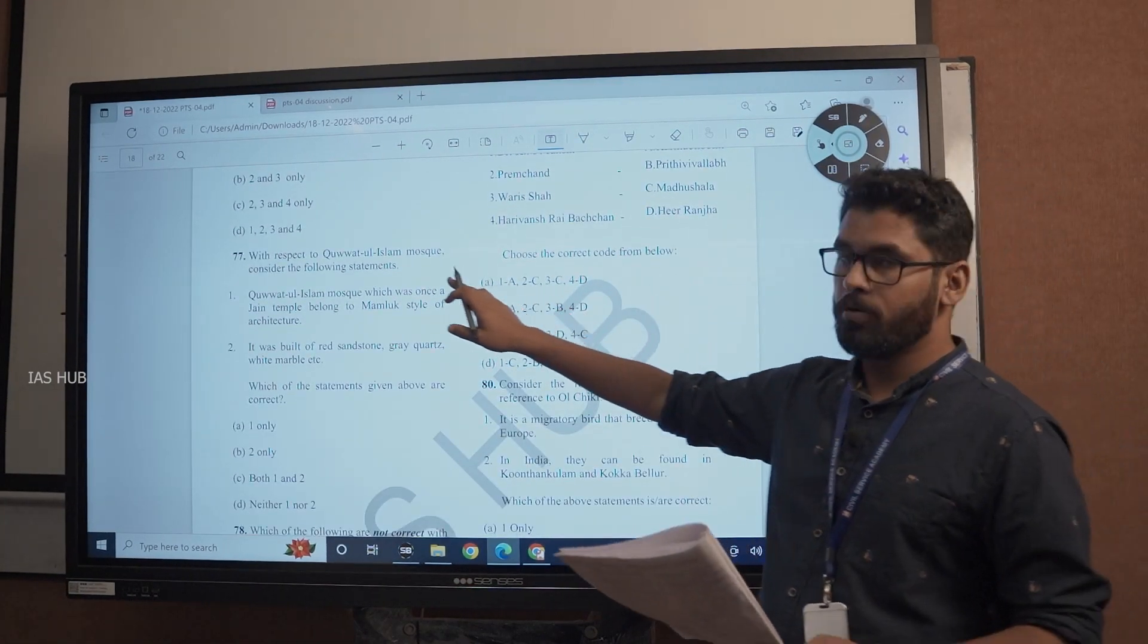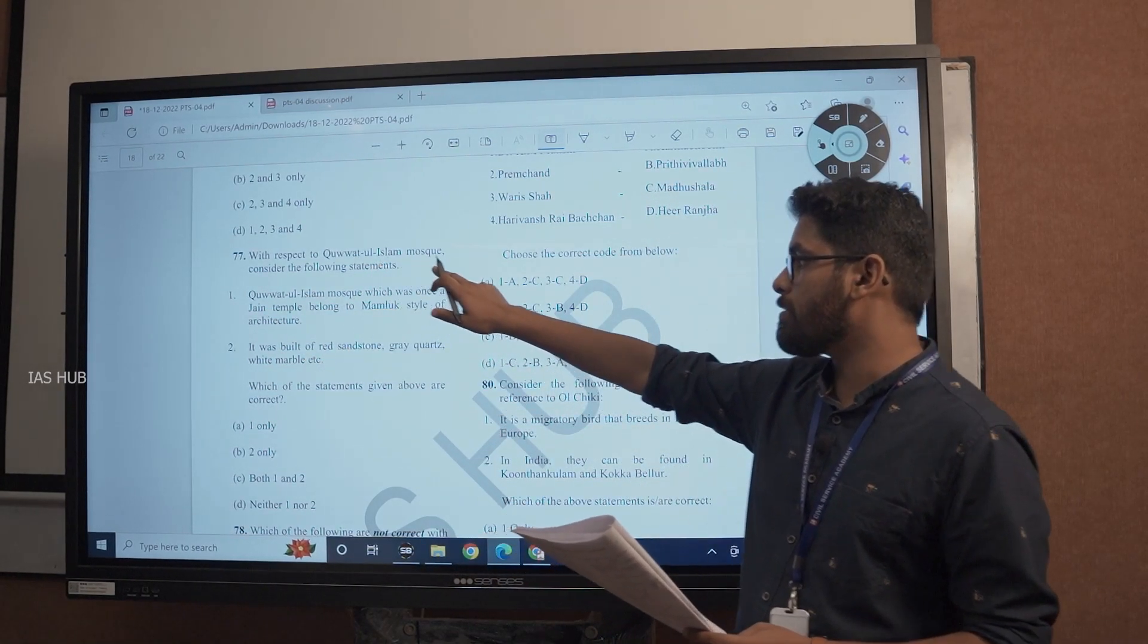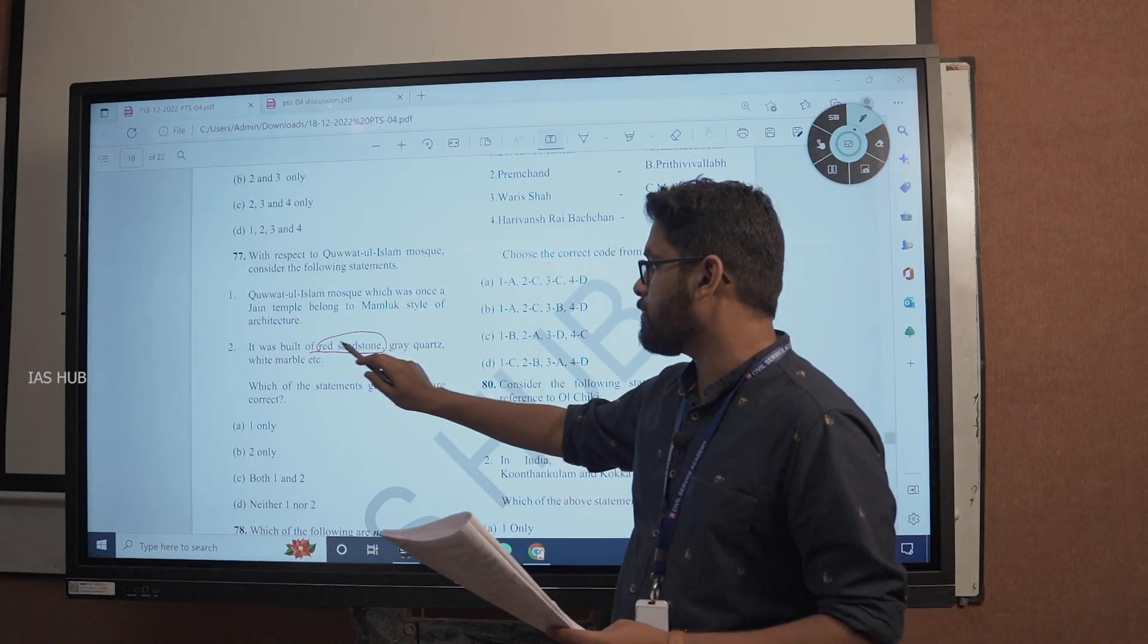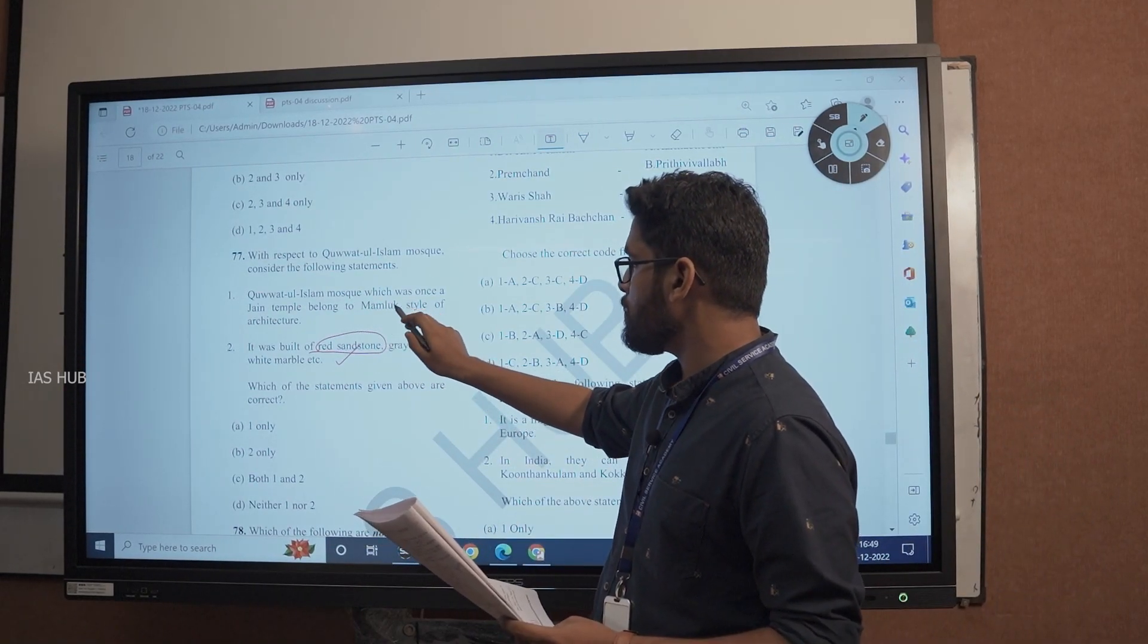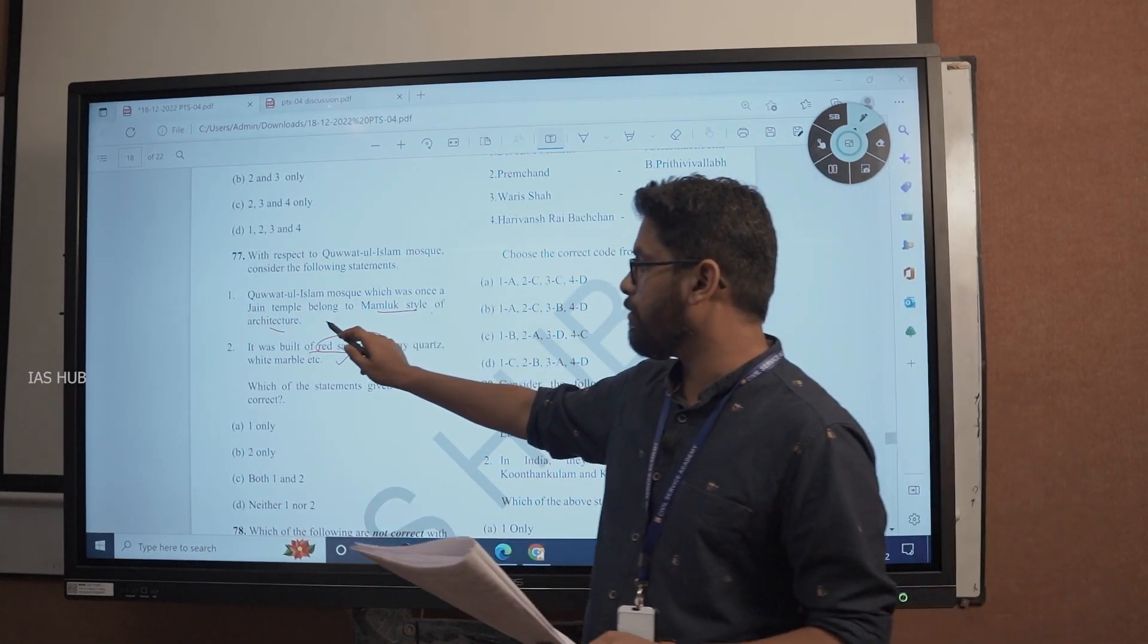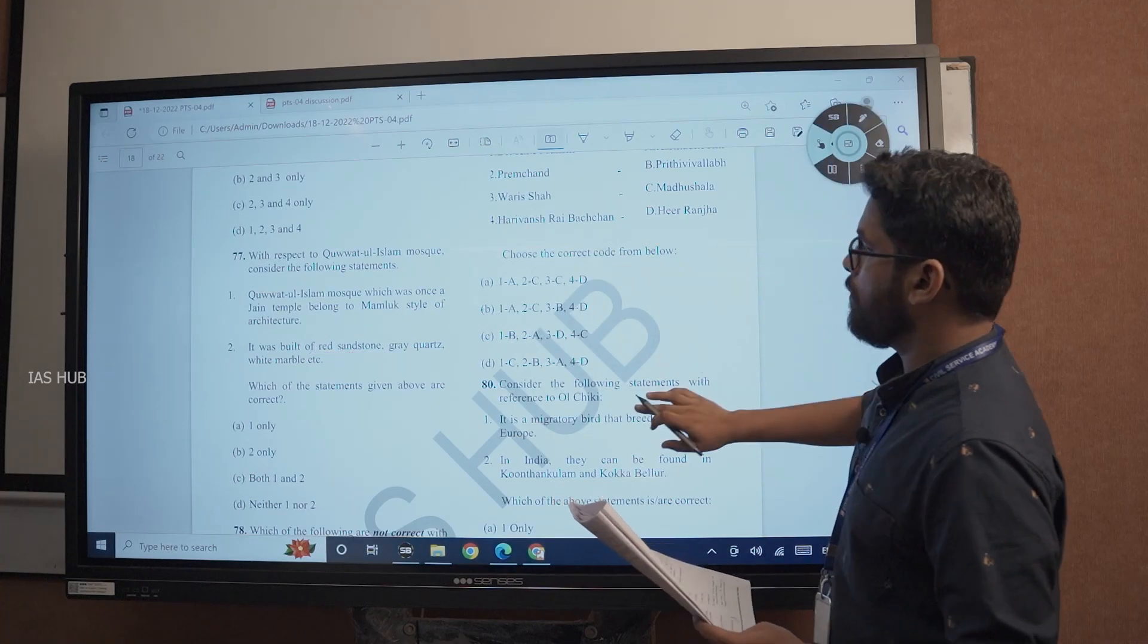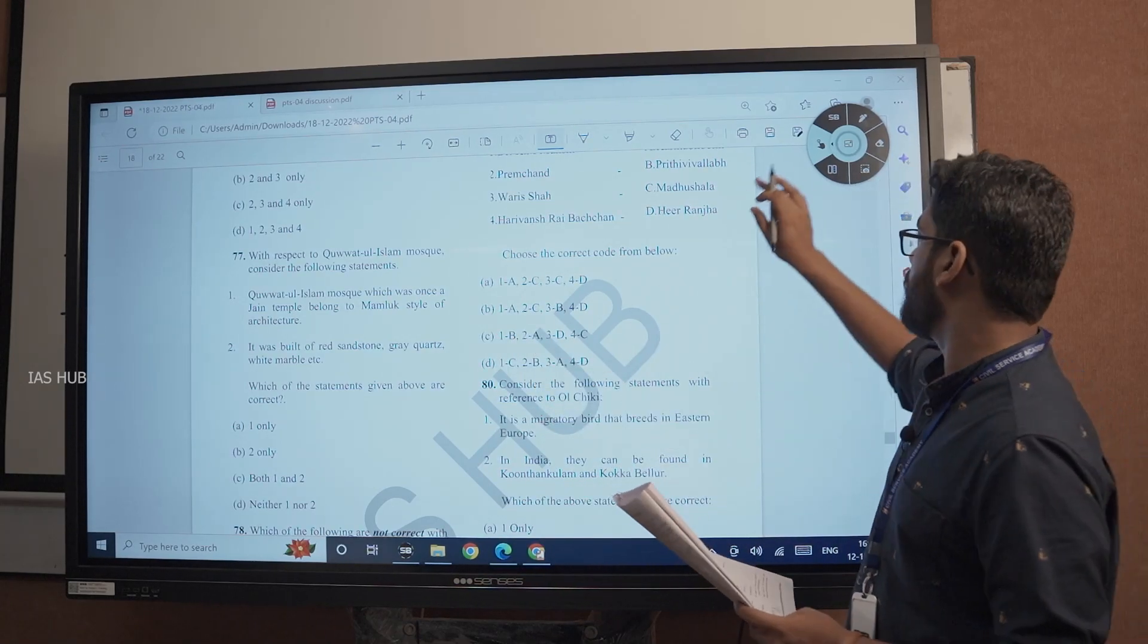With respect to Kuvatul Islam Mosque, we have the southern gateway of Kuvatul Islam Mosque. We also discussed about the material - red sandstone, grey quartz, white marble. So 2 is correct. Kuvatul Islam Mosque which was once a Jain temple belonged to Mamluk style of architecture, also known as Seljuk style. So the answer is both 1 and 2. Alai Darwaza is the southern gateway of this mosque, Kuvatul Islam Mosque.